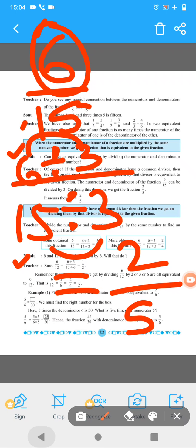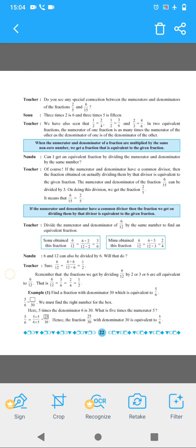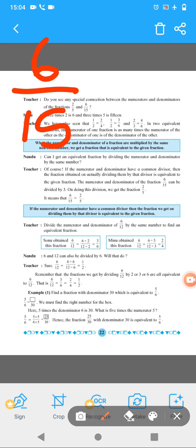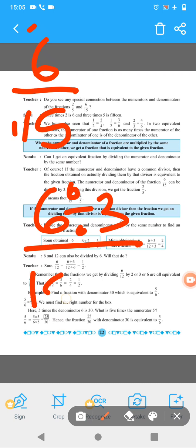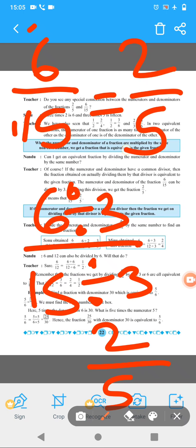Students, what do we have to do? We have to find one number in the table of 6 and 15. So number 3 is there, then do the division and we can get 2 upon 5. So 6 upon 15 is equal to 2 upon 5. The both are equivalent fraction. Now one more example has given here.